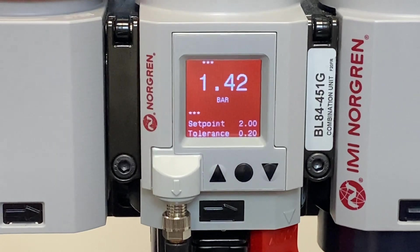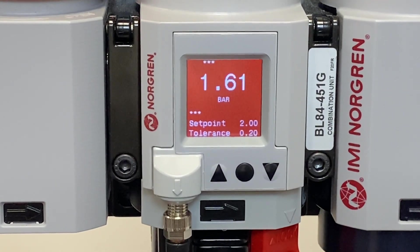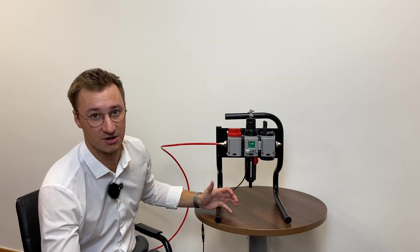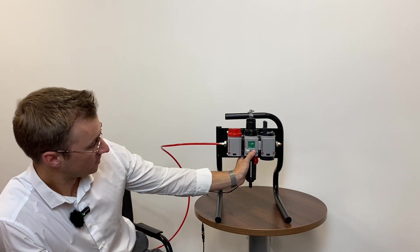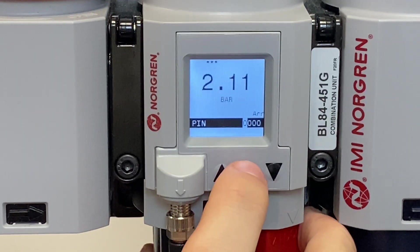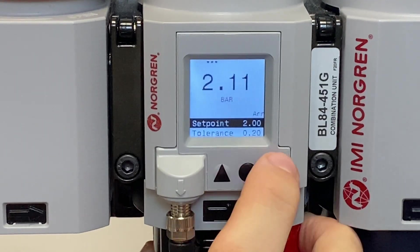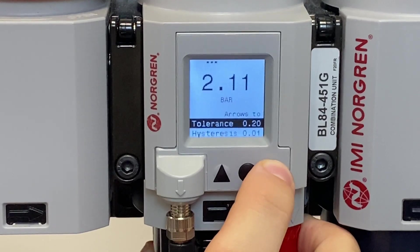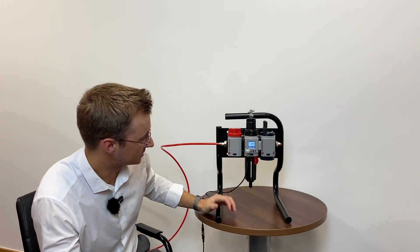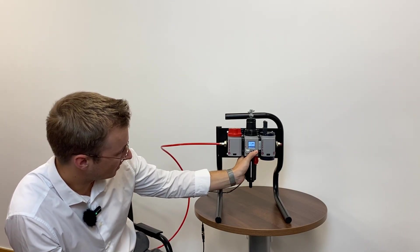I'm now going to take you through how to change the pressure units on the screen. So if we long press here for one second, it takes us into our PIN menu. If we long press again, that confirms the PIN and we're into the settings menu. Press the down arrow here to scroll down to pressure units.